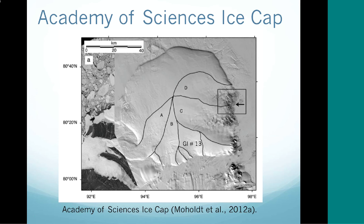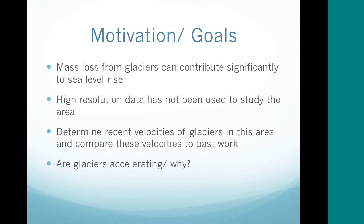As this ice flows out into the ocean, the water level contributes to ocean level rise. Although this ice cap is not nearly as big as Antarctica or Greenland, if all of the glaciers in the Russian High Arctic were to melt, it would contribute a total of about 41 millimeters to sea level rise. So it is still significant in the global scheme of things.